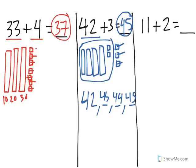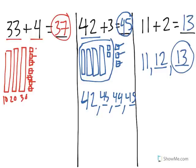And the last one is 11 plus 2. Let's try counting on. I have 11, but I need to find out the next two. 12, 13. 11 plus 2 is equal to 13.